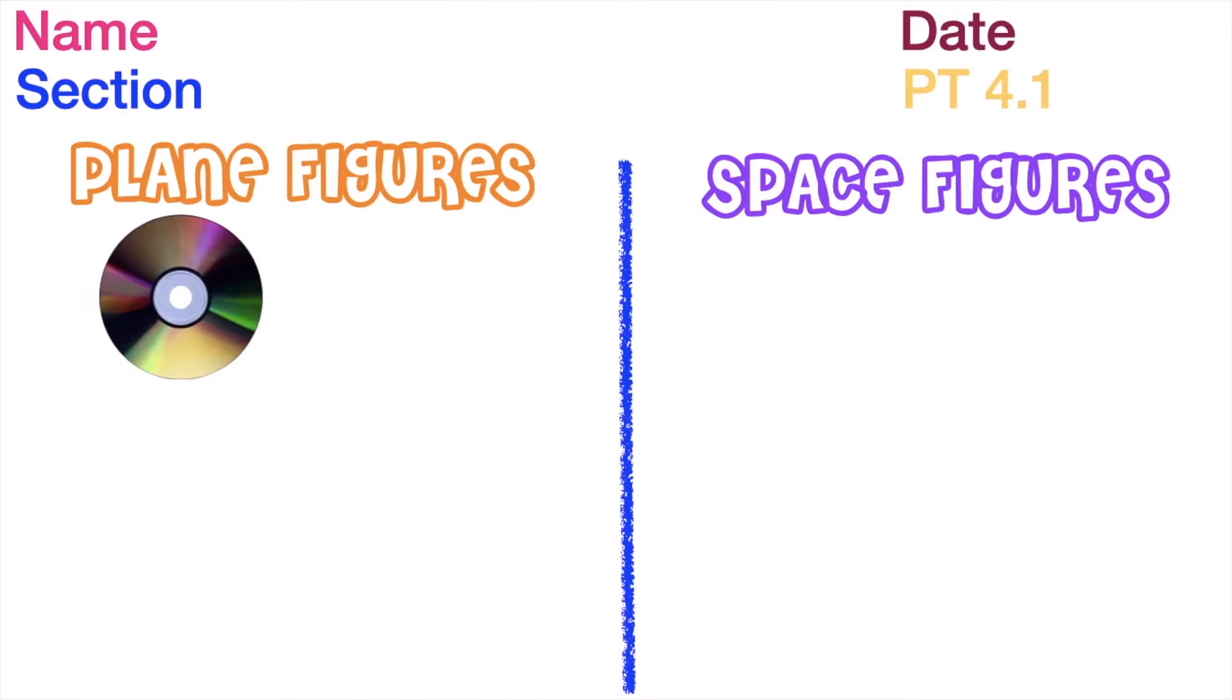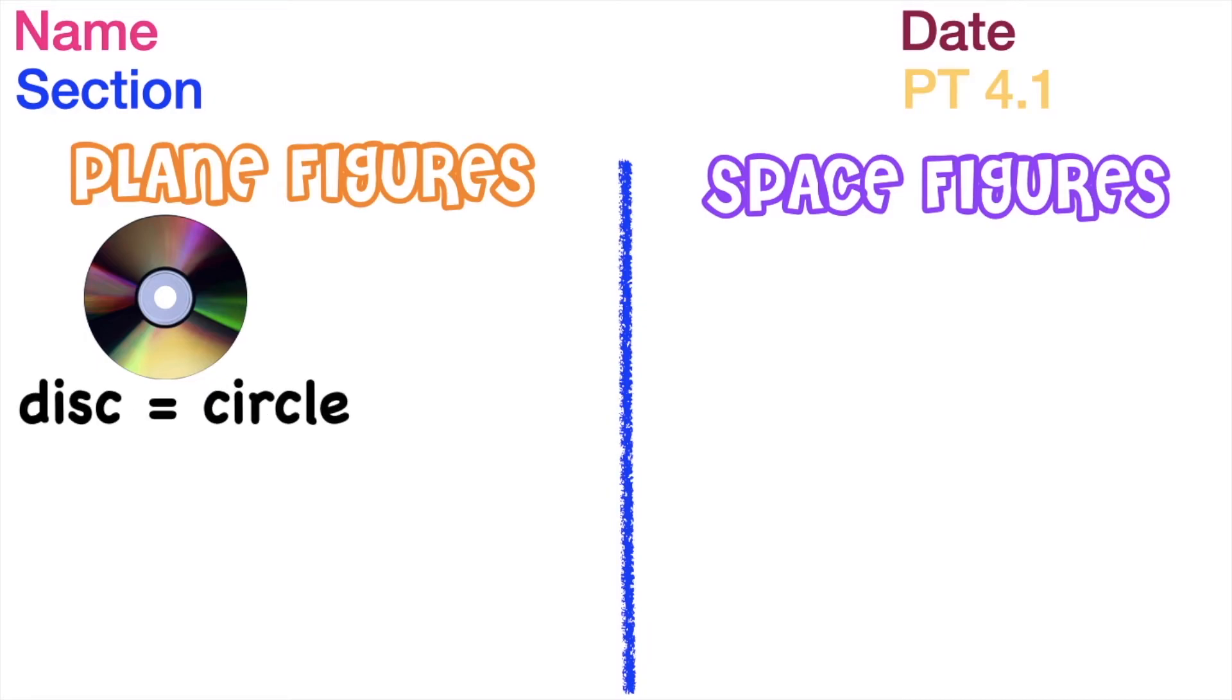we have disk, then you're going to write the name of the object, which is disk, then write circle since a disk is a circle.